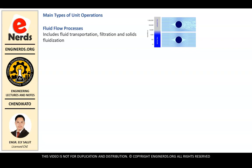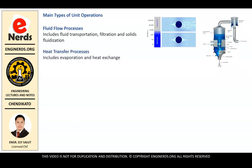And then we have the heat transfer processes which includes evaporation and heat exchange. For example, you're taking a shower and then you want the water to be warm, so you will be using a heat exchanger. You don't want boiling water when taking a shower.